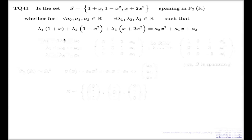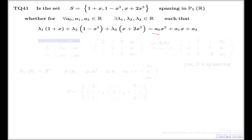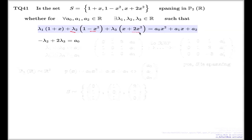Looking at the equation, you can combine all the x² terms on the left-hand side and equate the combined coefficient to a₀. The x² term appears with coefficient −λ₂ from the second polynomial and with coefficient 2λ₃ from the third polynomial, so the combined coefficient of x² on the left-hand side gives: −λ₂ + 2λ₃ = a₀.